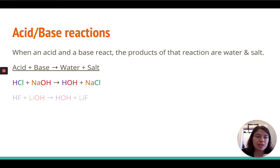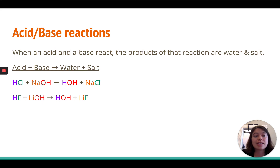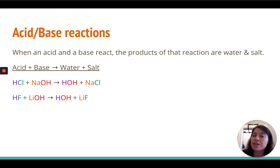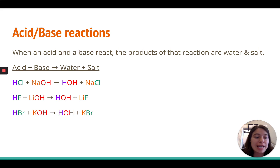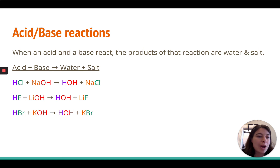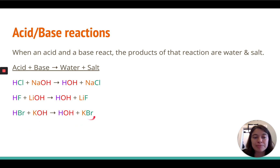Let's do another example. We've got hydrofluoric acid and lithium hydroxide — still an acid and a base — and again those cations just trade places. The lithium comes and stays with the fluorine, and the hydrogen goes and stays with the hydroxide. You're left with HOH (water, H2O) and lithium fluoride, which is a type of salt. Here's another: hydrobromic acid HBr — a halogen and a hydrogen cation — reacts with potassium hydroxide. The potassium combines with the bromide to produce water and potassium bromide as the salt. The salt is always made of the cation from the base and the anion from the acid.